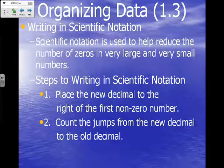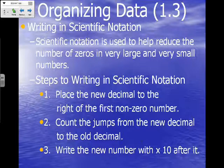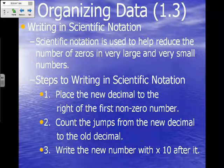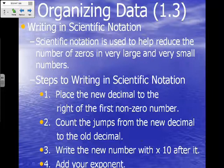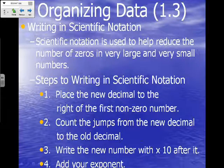Step two: count the jumps from the new decimal to the old decimal. Step three: write the new number with times 10 after it — the times 10 represents powers of 10. Every decimal place that you move, you're moving a power of 10, so if you move three decimal places, you're moving times 10 to the third power. Step four: add your exponent. Pause the tape and make sure you get all four of these written.